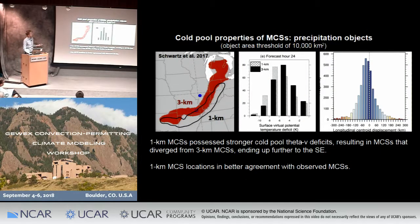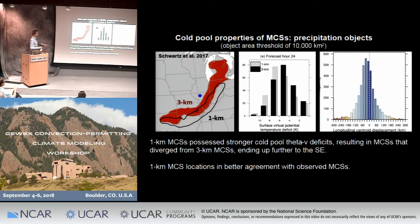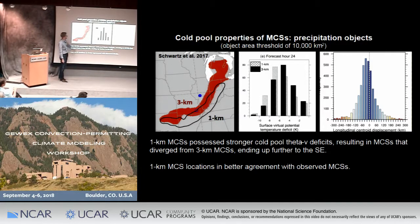We've also looked at MCS properties in the one-kilometer forecasts. We tend to see cold pools that are slightly stronger in the one-kilometer simulations, and that translates over a six- to twelve-hour period into displacements between the three- and one-kilometer forecasts. This shows the cold pool virtual potential temperature deficit, indicating that the one-kilometer cold pools are slightly colder, which results in a faster propagation speed to the south and east.